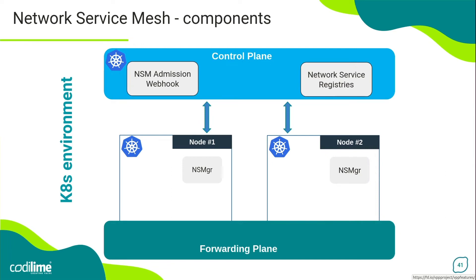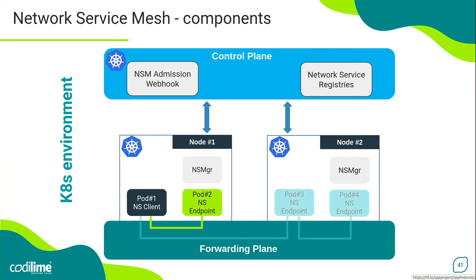The NSM init container negotiates with the NSM manager to accomplish this process, and as a result, a network service interface is injected into the client pod. The whole process is transparent from a client pod perspective. The network service manager is an NSM control plane component deployed as a daemon set on the Kubernetes cluster. It forms a full mesh by establishing communication with other managers within a given domain, and manages network service requests from client pods and the process of creating virtual wires between clients and endpoints. The network service mesh forwarder is a data plane component responsible for providing forwarding mechanisms. NSM can use different forwarding solutions like VPP, SR-IOV, kernel networking, and so on.